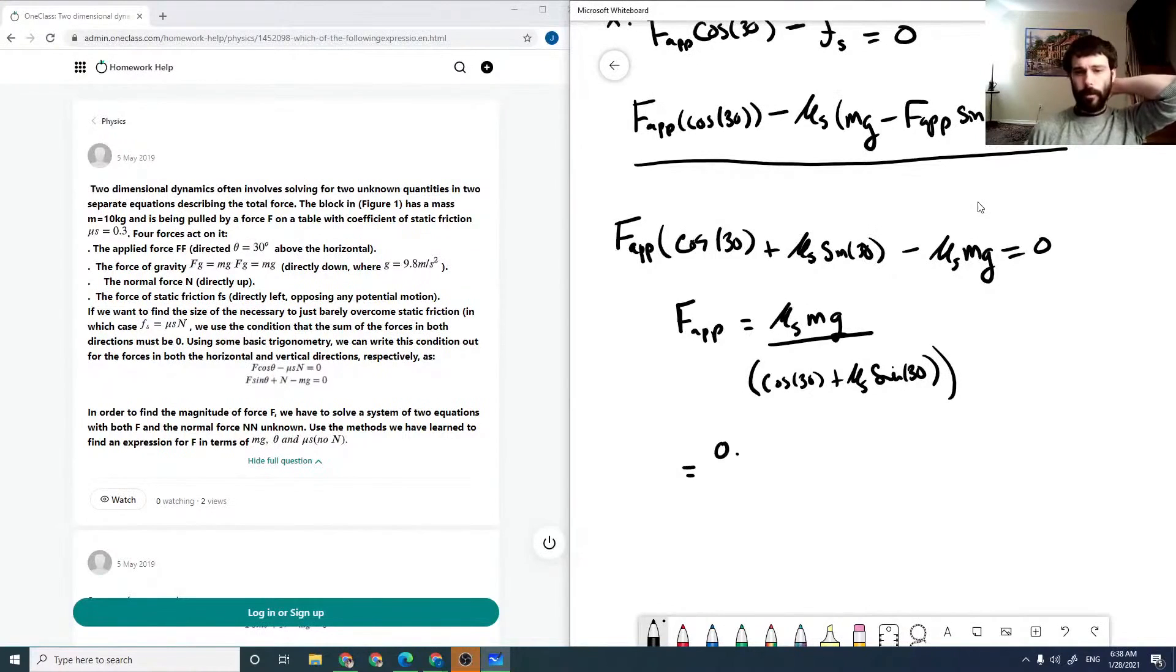So that would be 0.3 times our mass, which is 10 kilograms, times our g, which is 9.8 meters per second squared, over cosine of 30, which is root 3 over 2, plus 0.3, and sine of 30 is a half.